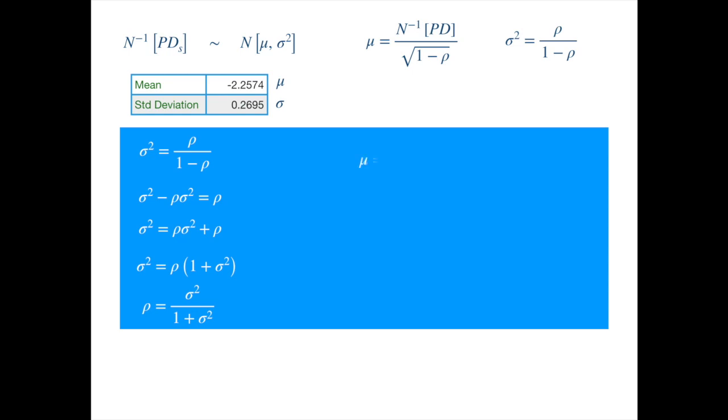Now let's solve the second expression for the PD. Multiplying both sides by the denominator of the fraction on the right-hand side we get. Applying normal to both sides we get PD in terms of the parameters we already know.